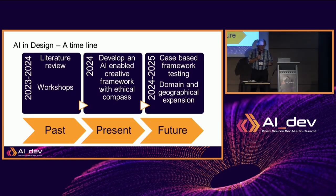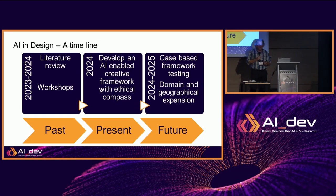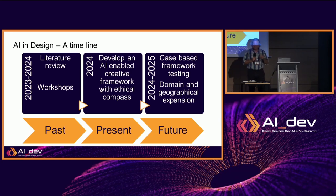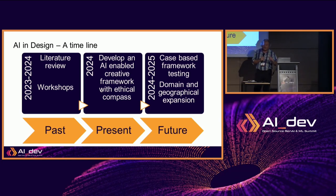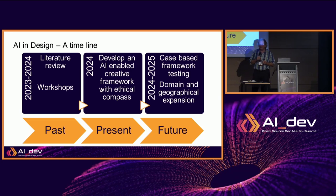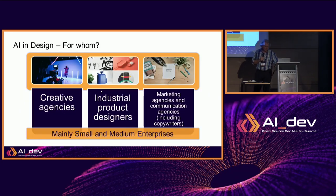Where are we in the research project? We did some literature review. We have done some workshops with students and some players in the industry, and are currently developing an AI-enabled framework with an integrated ethical compass. The intention in the coming year is to have case-based framework testing — implementing the framework into the industry and trying it out in several specific contexts. When these tests prove sound and usable, we would like to look at expanding both the domain and the geographical scope.